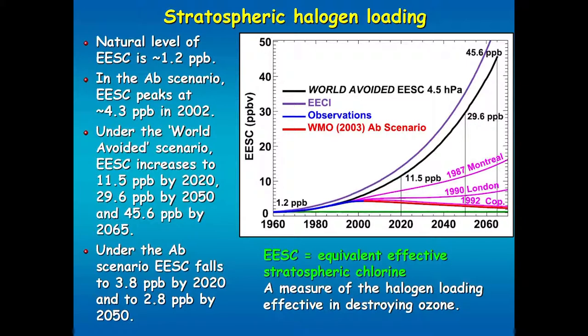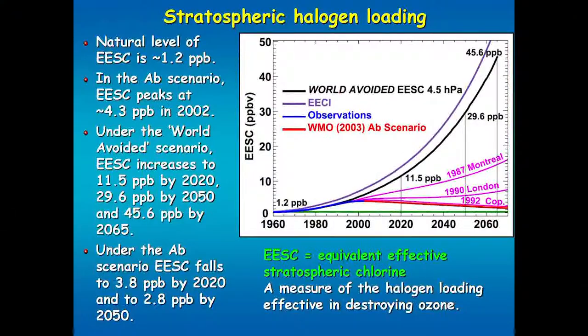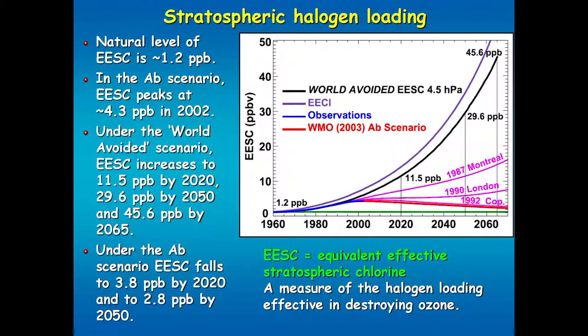This is what would have happened when the Montreal Protocol was first put in place, and then various amendments led to this red line. Had there been no protocol and had emissions of ozone depleting substances continued to grow by 3% per year from 1974, we would be on this black line, reaching about 45.6 parts per billion by 2065 — compared to a peak of about 4.3 parts per billion under the Montreal Protocol. With the protocol, it's peaked and on its way down, and we expect to be down to about 2.8 parts per billion by the middle of the century.